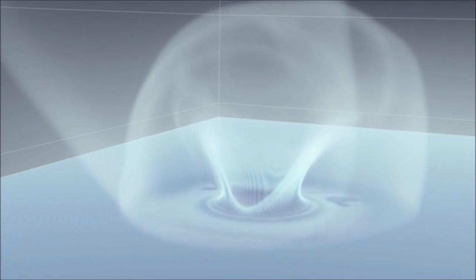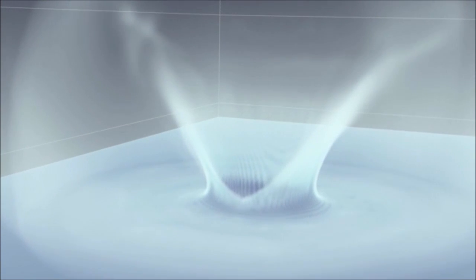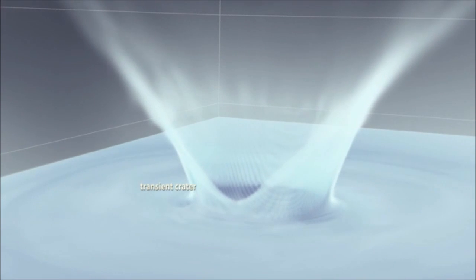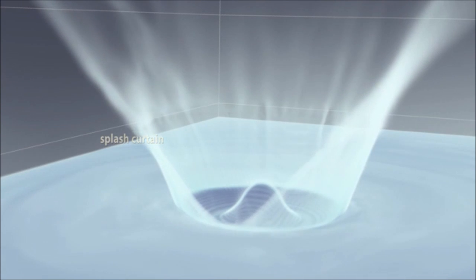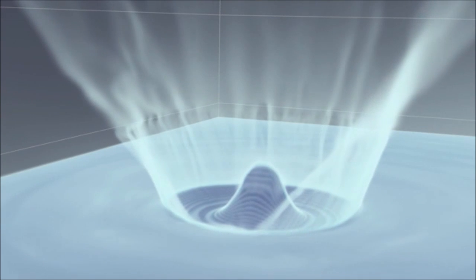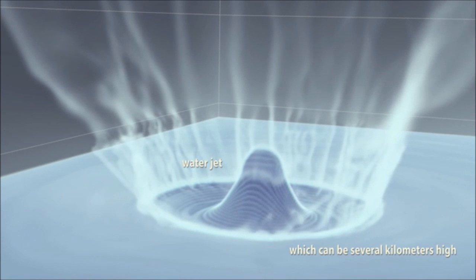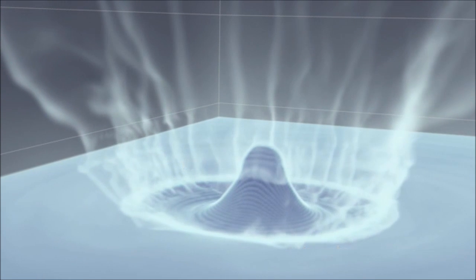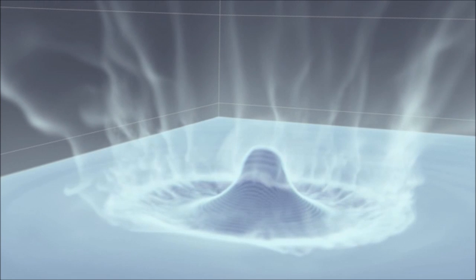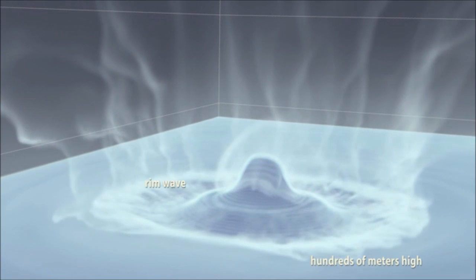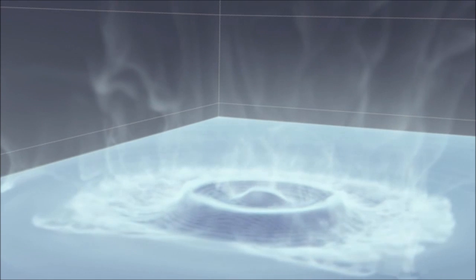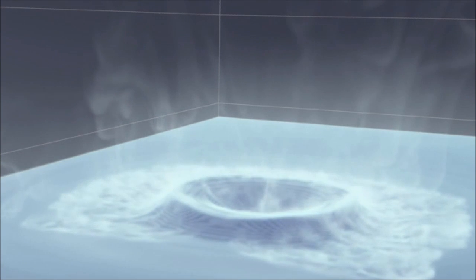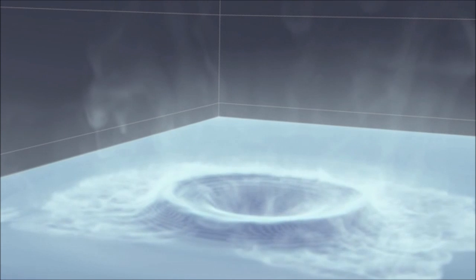By visualizing just the water in an impact simulation, we can study the formation of this tsunami wave. Immediately upon impact, a transient crater is created, and a splash curtain is thrown high into the air. Water rushes into the crater, forming a water jet which can be several kilometers high. This jet collapses to form a rim wave, which is hundreds of meters high. A new water jet begins to form, which will in turn create a new rim wave, a process that continues for some time. Each of these rim waves has the potential to become a tsunami.